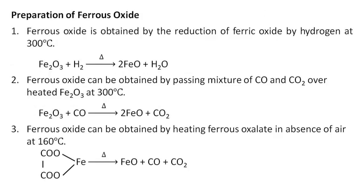Preparation of ferrous oxide: Ferrous oxide is obtained by the reduction of ferric oxide by hydrogen at 300 degrees Celsius. Ferrous oxide can be obtained by passing a mixture of carbon monoxide and carbon dioxide over heated ferric oxide at 300 degrees Celsius. Ferrous oxide can be obtained by heating ferrous oxalate in absence of air at 160 degrees Celsius.